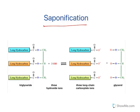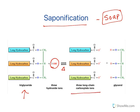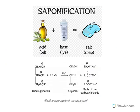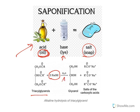The third process is saponification, also known as soap formation. A triglyceride is treated with an alkali in the presence of heat, resulting in three long-chain carboxylate ions and glycerol. An oil, which contains fatty acids, is treated with a base — triacylglycerol plus sodium hydroxide with heat and water — and results in glycerol and salts of carboxylic acid, which is soap.